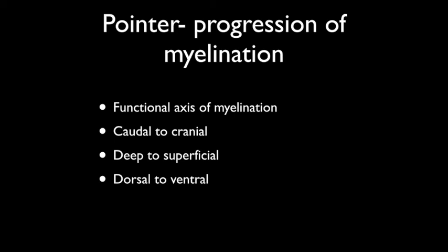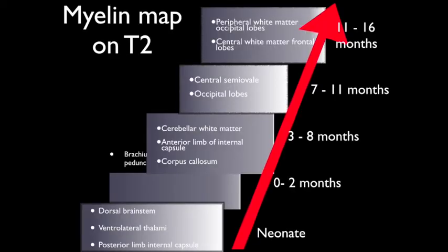Another way to think about this is the development of an infant or a fetus from the fish stage to the human stage, starting from the lower areas of the deep brain nuclei to the outer cortex. This is what we call a myelin map on T2-weighted images. In the neonate, the dorsal brainstem, ventral lateral thalami, and the posterior limb of internal capsule are myelinated. These are useful areas to look at.